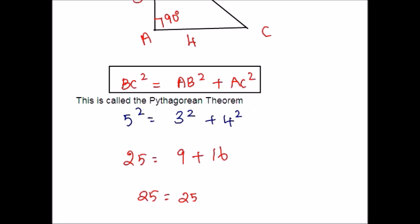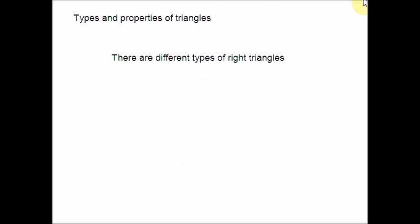The Pythagorean theorem helps to find whether a triangle is a right angle or not. If this condition is not satisfied, the triangle is not a right triangle. There are different types of right triangles. Our focus is on a special pair: the 45-45-90 and the 30-60-90 triangles.